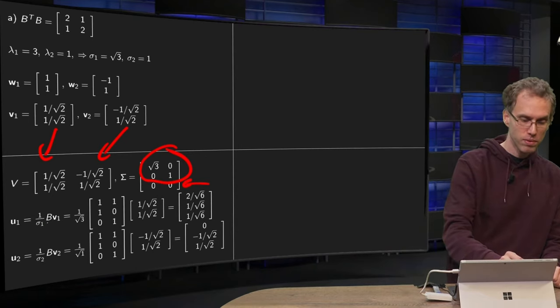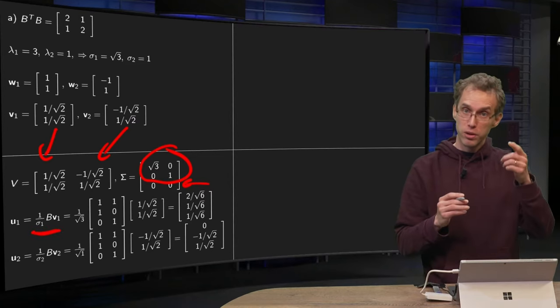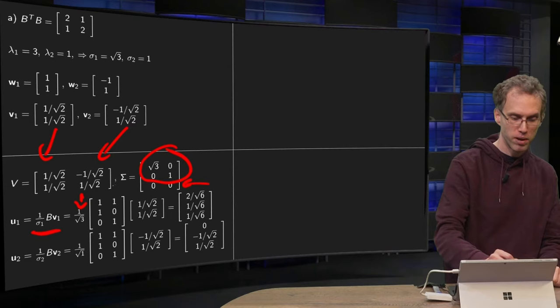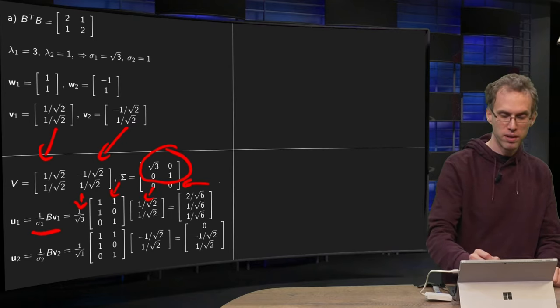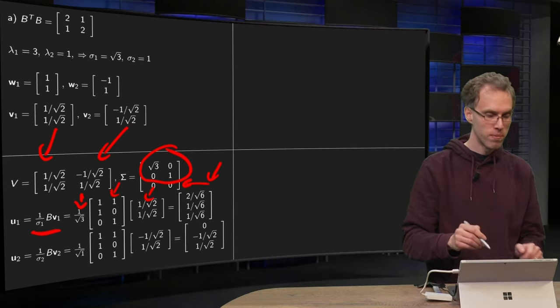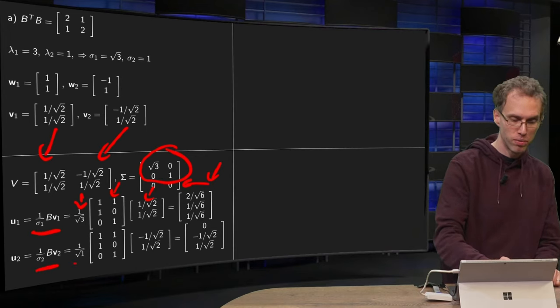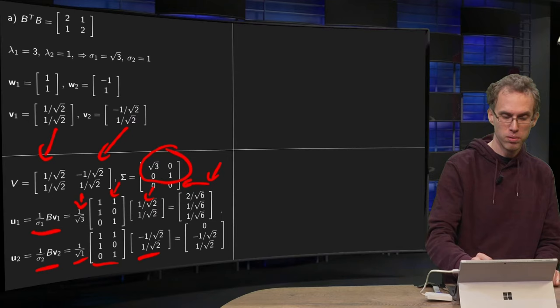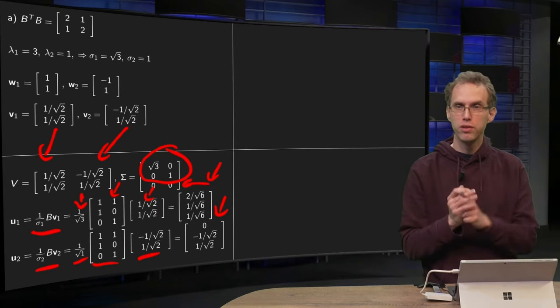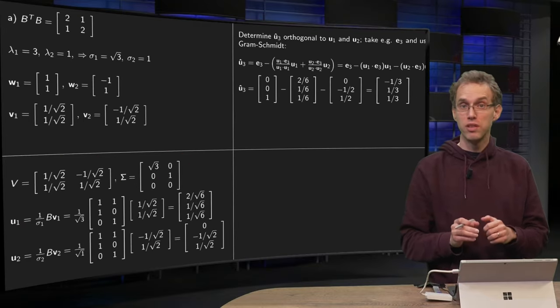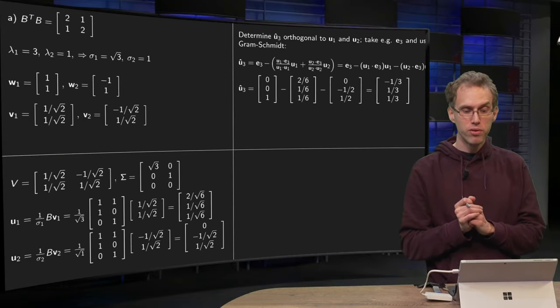U1 is clear. Compute U1 equals 1 over sigma1 times B times V1, so here 1 over sigma1, the B and the V1. You can compute it yourself, there you go. And U2 similarly, 1 over sigma2, B times V2, 1 over sigma2, B, V2. Compute yourself, there you have your U2, nicely normalized and orthogonal. But now you have to determine some U3.